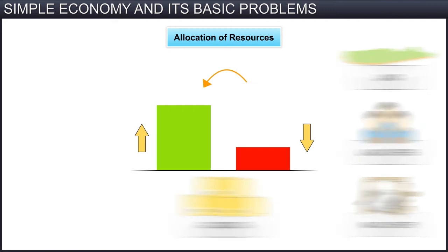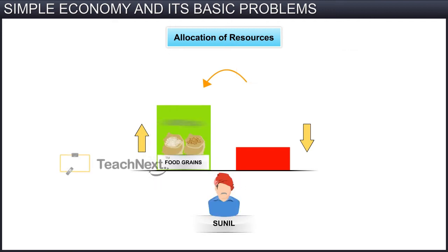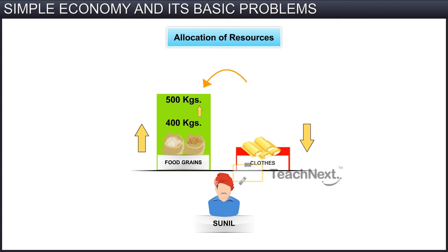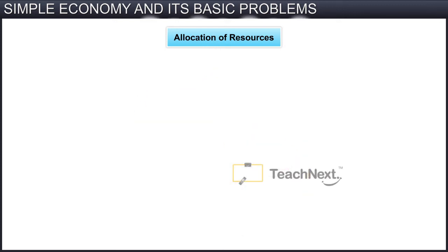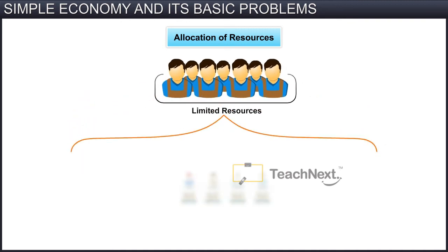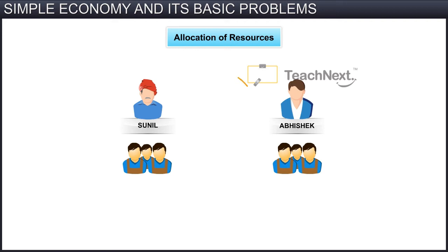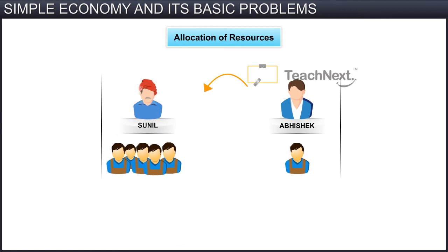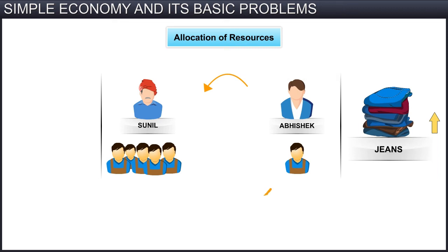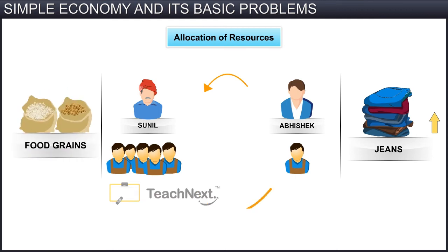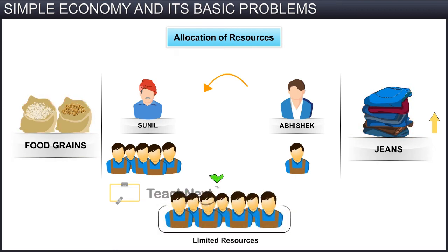In the case of our four friends, for Sunil to increase production of food grains from 400 to 500 kilograms, some of the resources need to be shifted from the production of clothes and allocated to him. But since the resources are limited, we only have those from within the friends group to draw on. So for this, we have to transfer some of the resources from Abhishek, who is a firm owner, to Sunil. By shifting the resources from production of one good to another, the limited resources can be used in the best possible way.